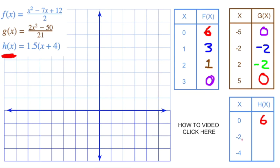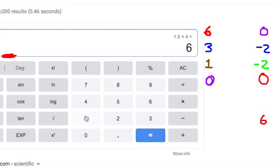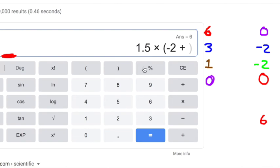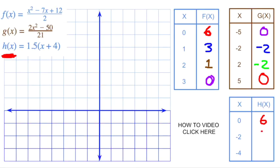What about if x is negative 2? 1.5 times, parentheses, negative 2, plus, what is it, plus 4? Answer: 3. And last but not least, what if x is negative 4? All right, this one's easy. Negative 4 plus 4 is 0 times anything is just going to give me 0. That is what it takes to fill out these tables.